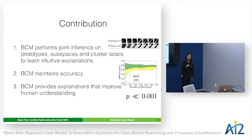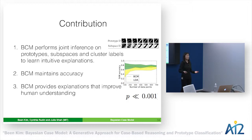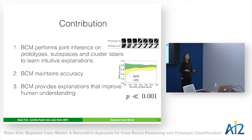In summary, today I talked about part of my thesis work on making machine learning models that provide intuitive explanations to humans about machine learning results. BCM performs joint inference on explanations and clustering, maintains accuracy, and can provide intuitive explanations that further improve human understanding of machine learning results.